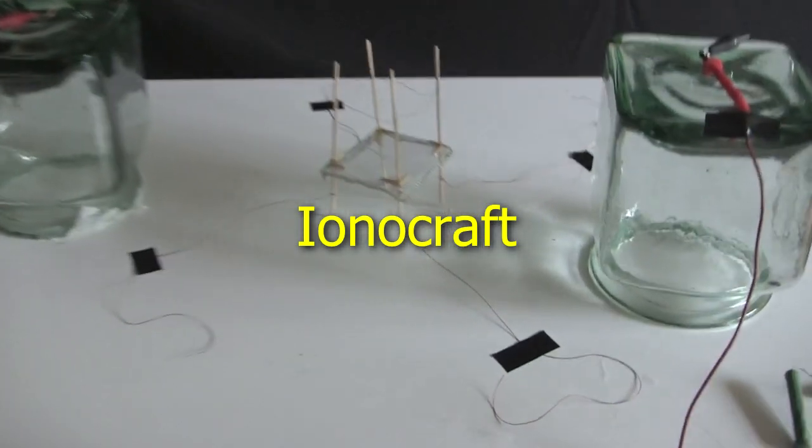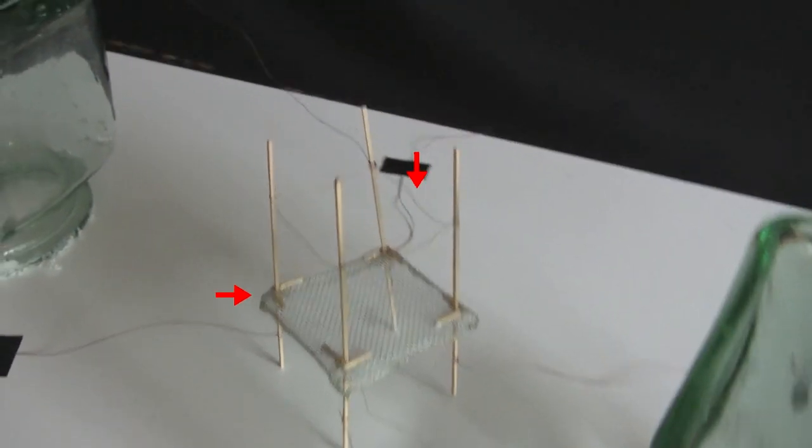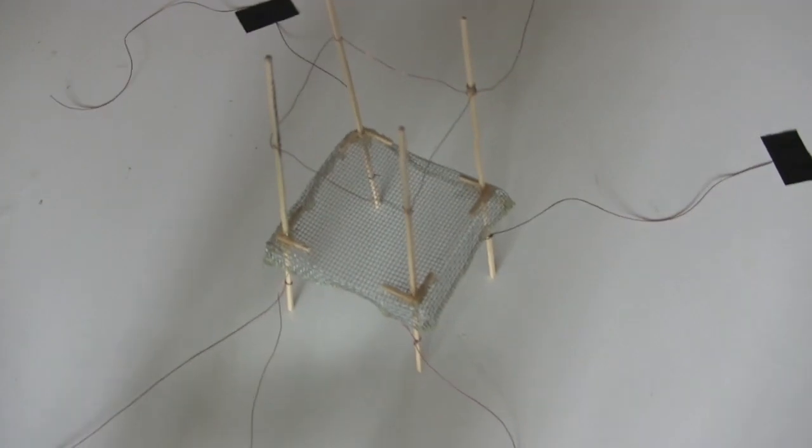This is a work in progress for an ionocraft, basically an aluminum fly screen with a thin wire up here. It's supposed to fly upward using an ion-wind type of jet, but I don't have it flying just yet.